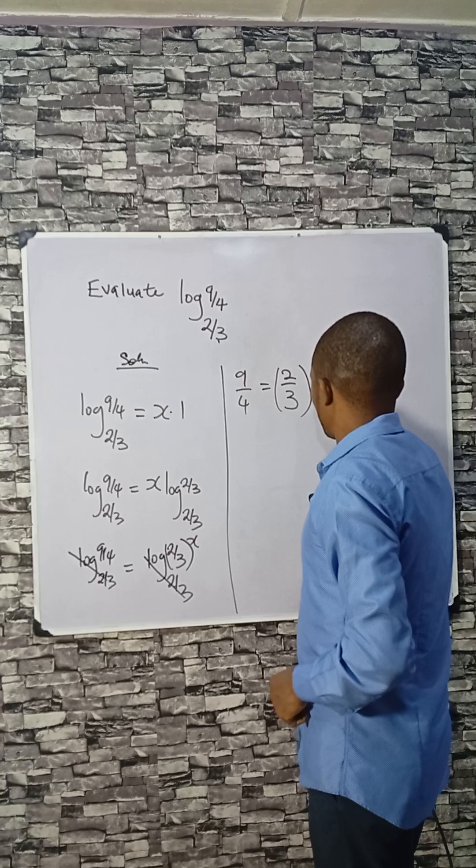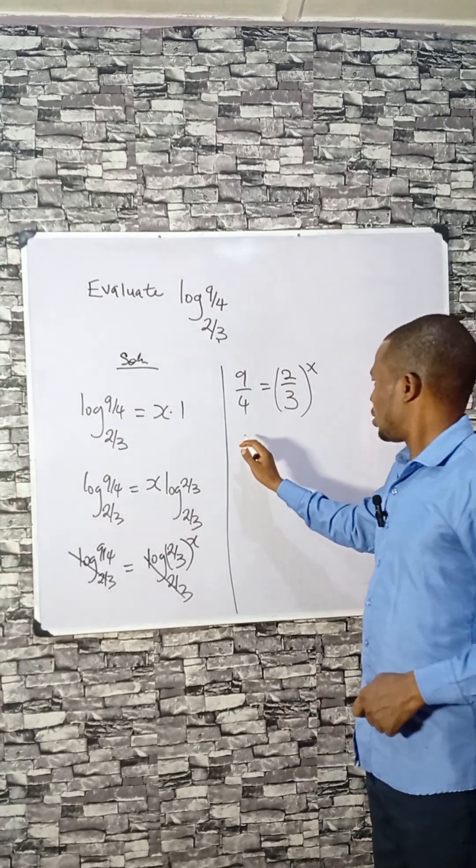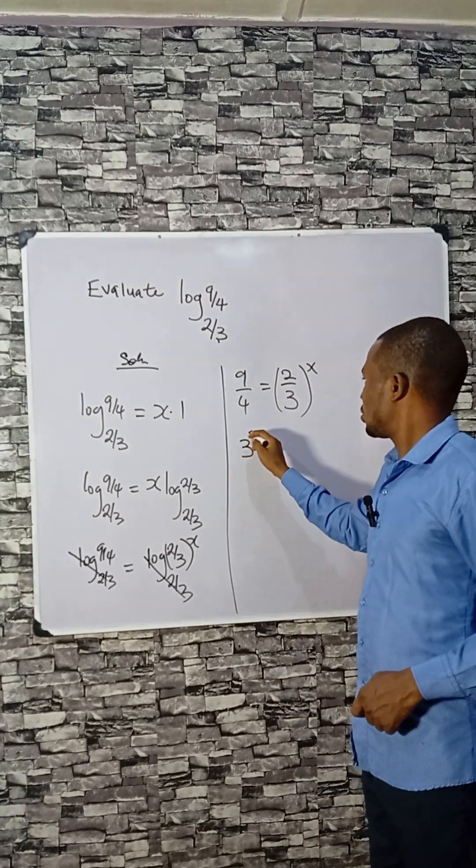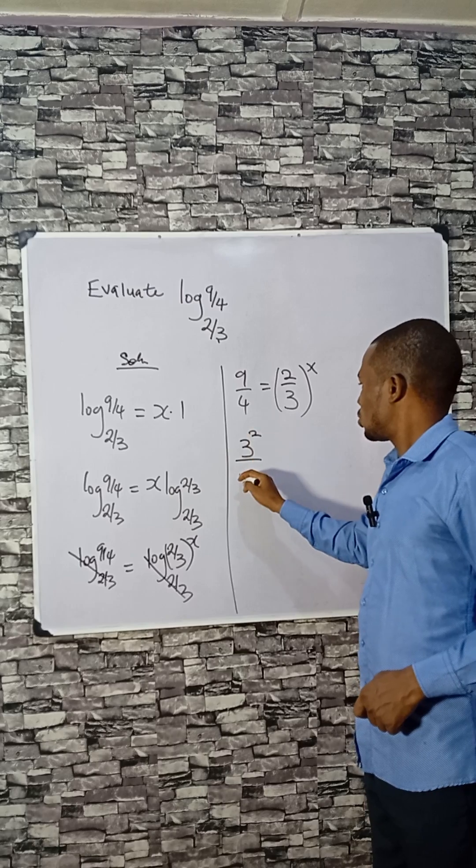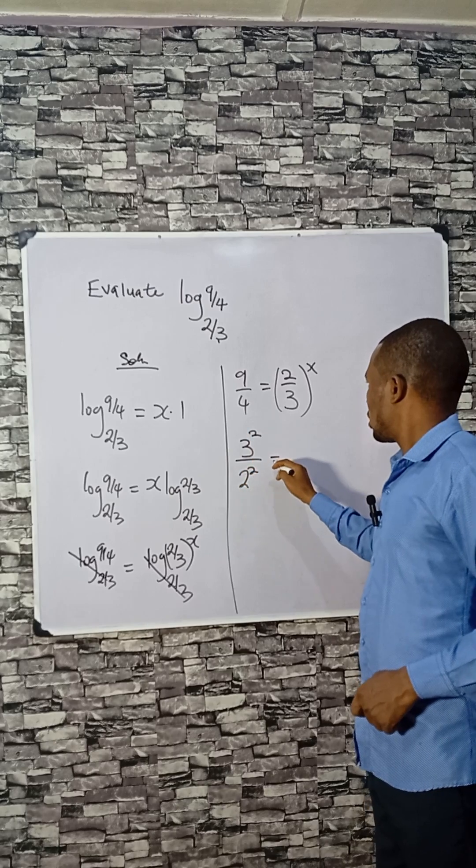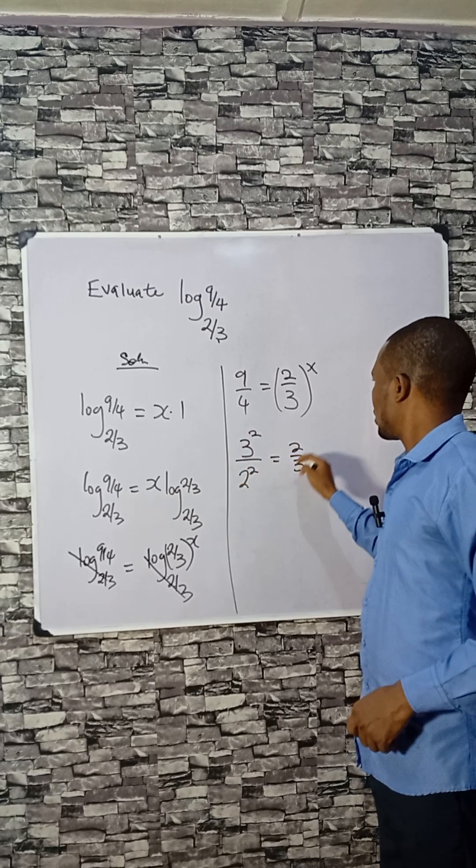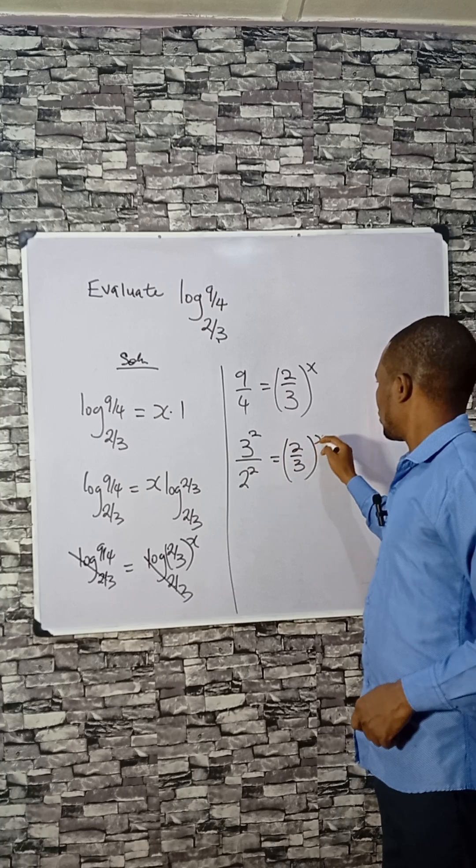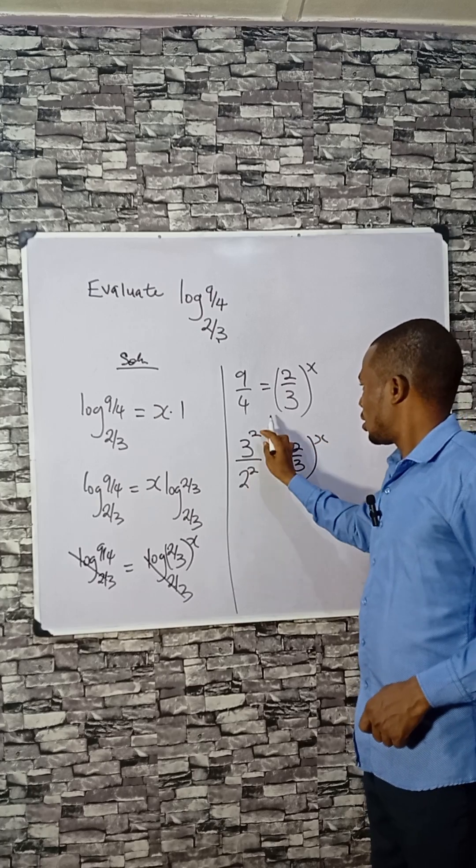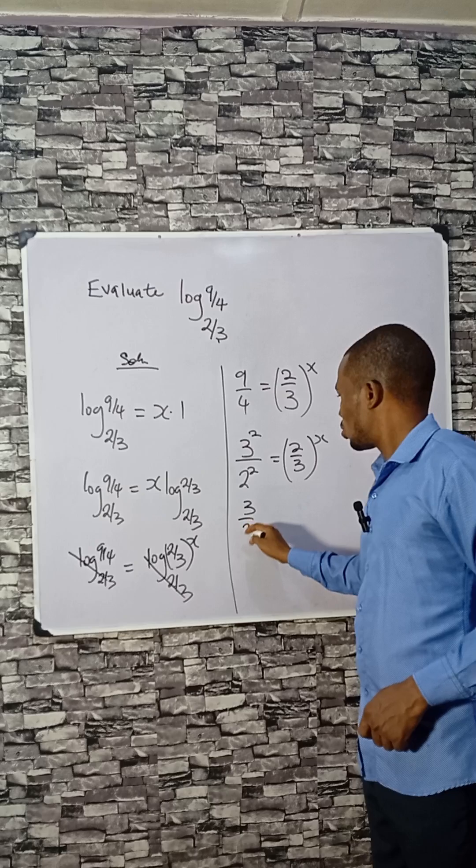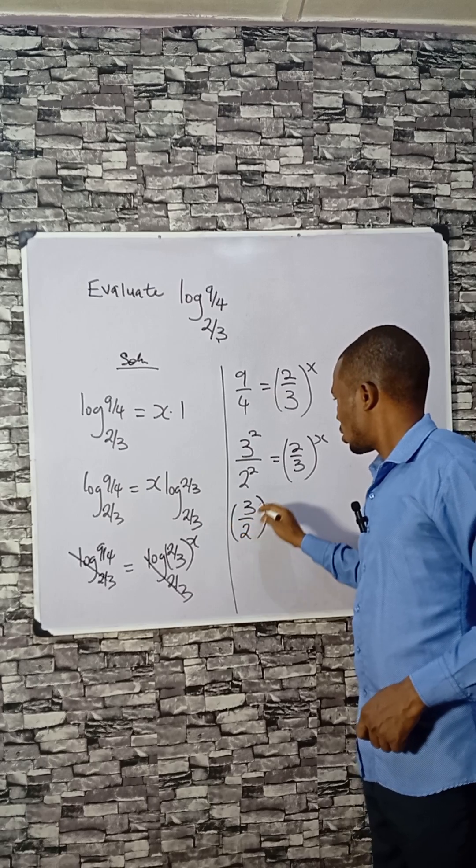Then raised to power x. From here we can write this as 3 squared, this as 2 squared, then 2 over 3 is 4x. They all raised to power 2, so we can do something here.